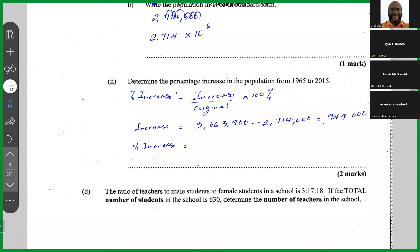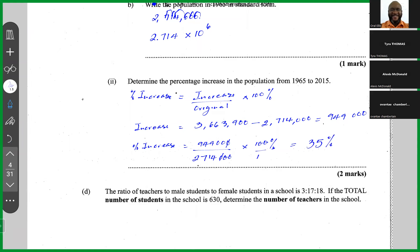So the percentage increase equals 949,000 over 2,714,000, multiplied by 100%. Cancelling zeros, this is 949 divided by 2,714, and the answer is approximately 35%. So between 1965 and 2015 there was a 35% increase in the population.